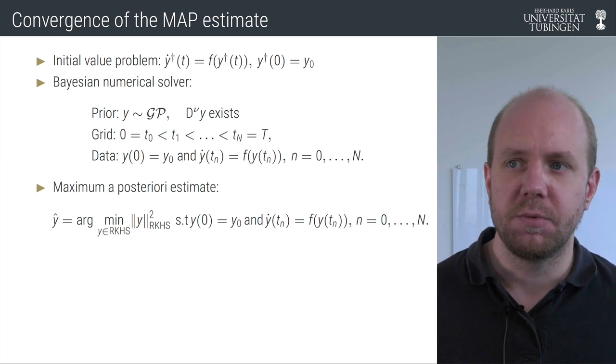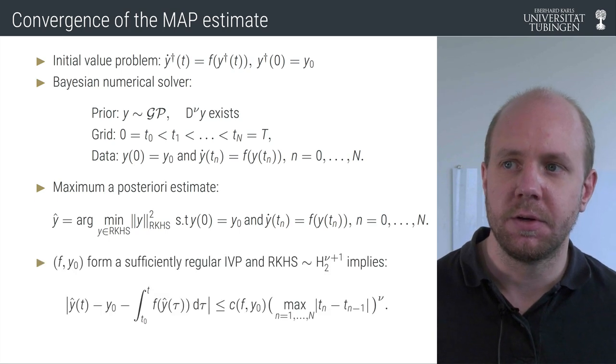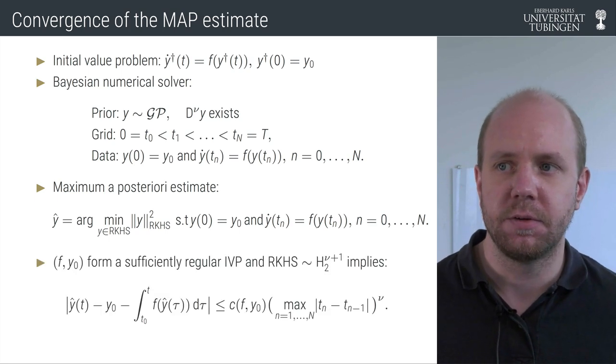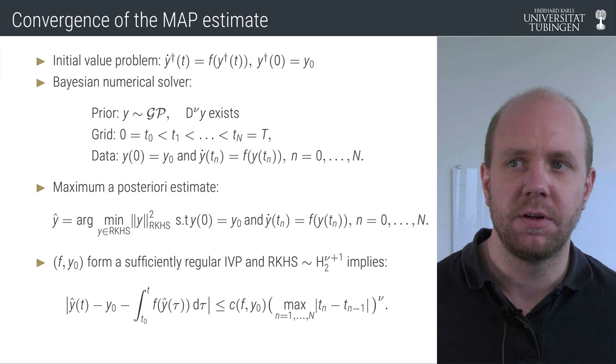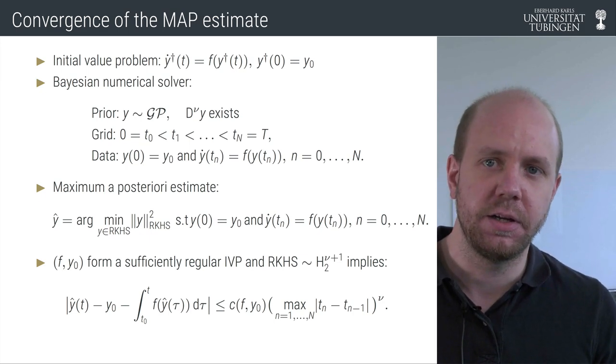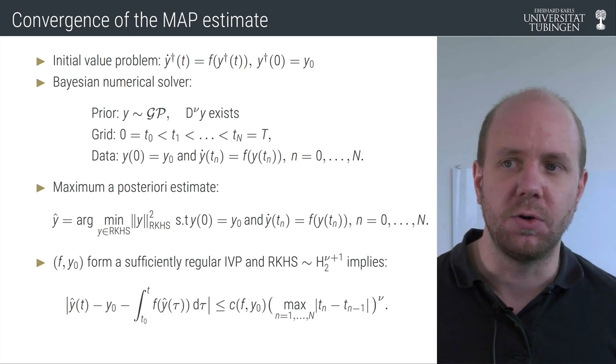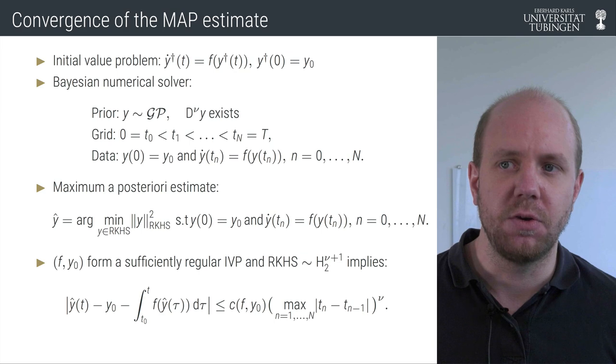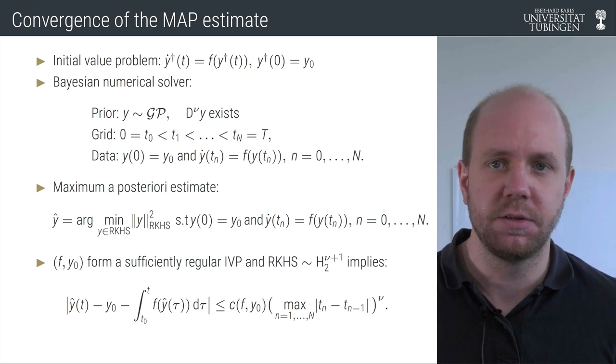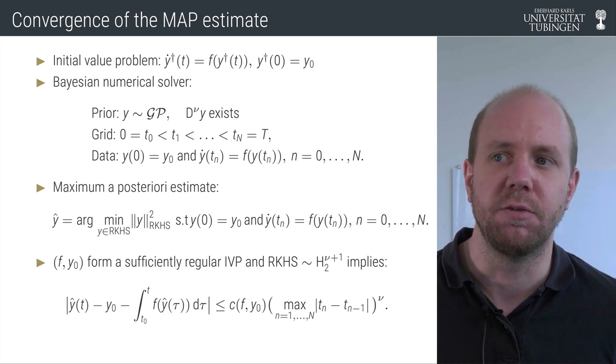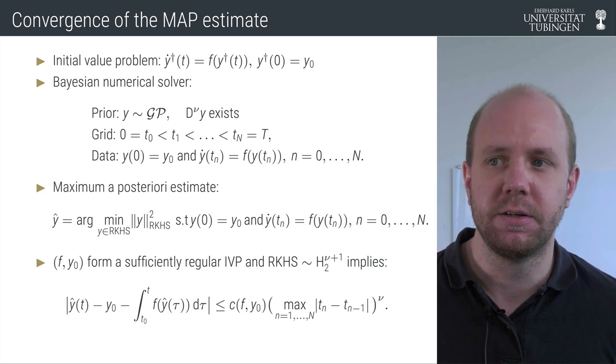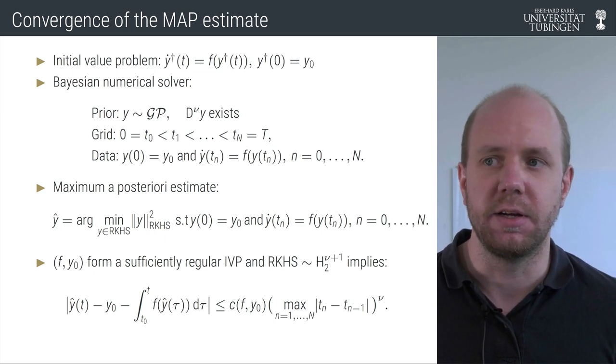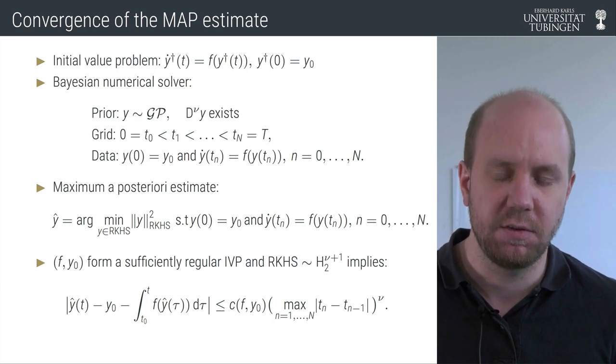For this object we have a result. If the function f and the initial value y naught form a sufficiently regular problem and the Gaussian process prior has an RKHS which is in some sense equivalent to a Sobolev space, then the MAP estimate actually converges at a polynomial rate in the maximum step size.